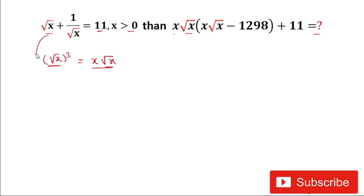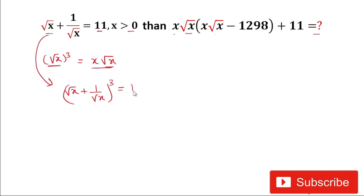So we need to cube this value. We will cube the left-hand side: [root(x) + 1/root(x)]³, and also cube 11 on the right-hand side. This expression is in the form of (a + b)³.